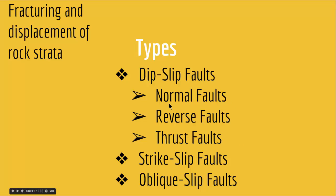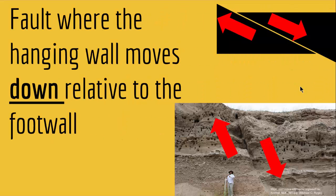A normal fault is a fault where the hanging wall moves down relative to the foot wall. In a normal fault, the hanging wall — the part over your head — moves down while the foot wall goes up. As you can see in this picture, the foot wall went up and the hanging wall went down. This strata went down relative to this one. This is called a normal fault.